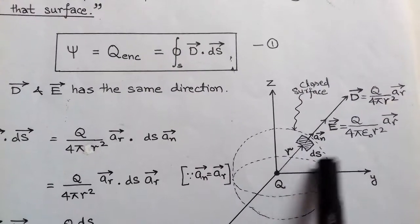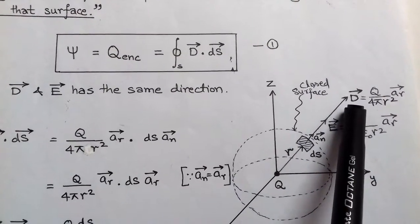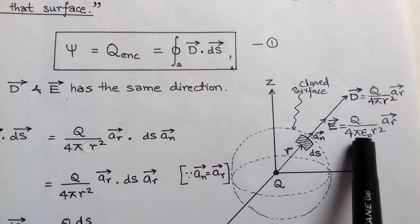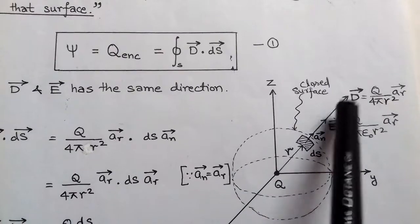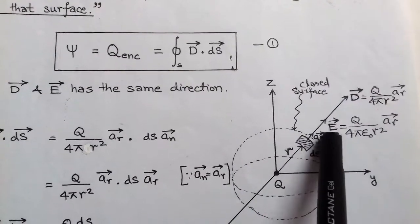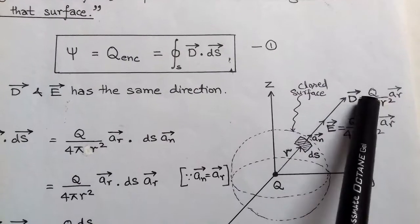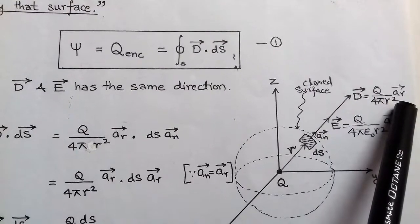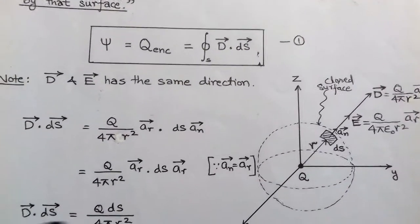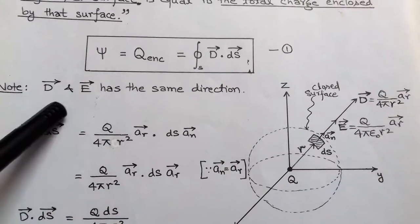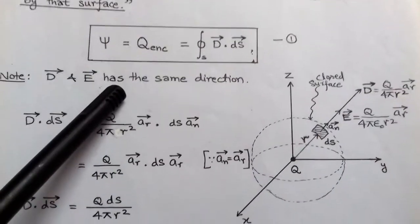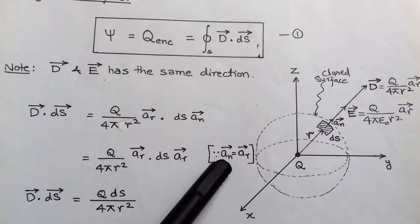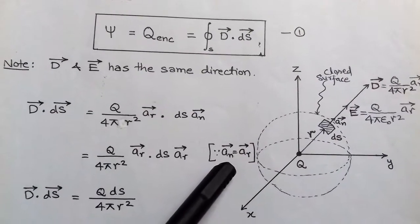From here we can also find the electric flux density D vector. D vector is nothing but epsilon-0 times electric field intensity E. So we take epsilon-0 with the electric field intensity, and the remaining part is q upon 4 pi r-squared in the direction of r. The electric field intensity is towards unit vector r, and unit vector r and the normal unit vector are the same.